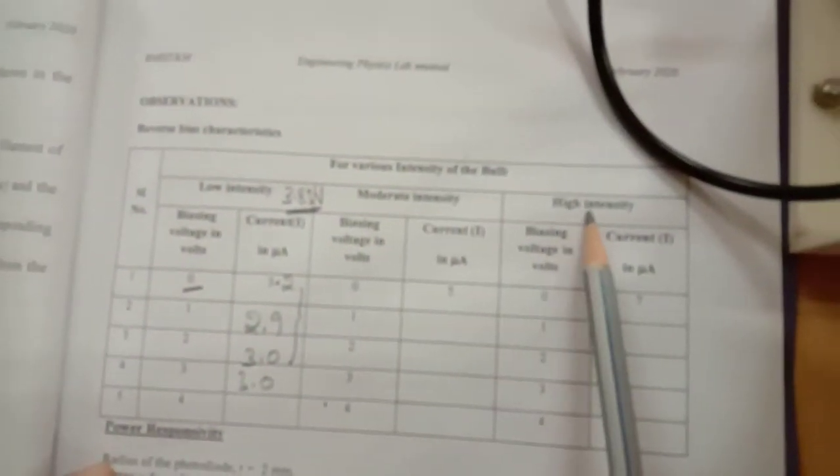This procedure we have to repeat for two more channels, that is for moderate intensity as well as high intensity. Your moderate intensity means you need to get 5 microamperes of current across the photodiode.